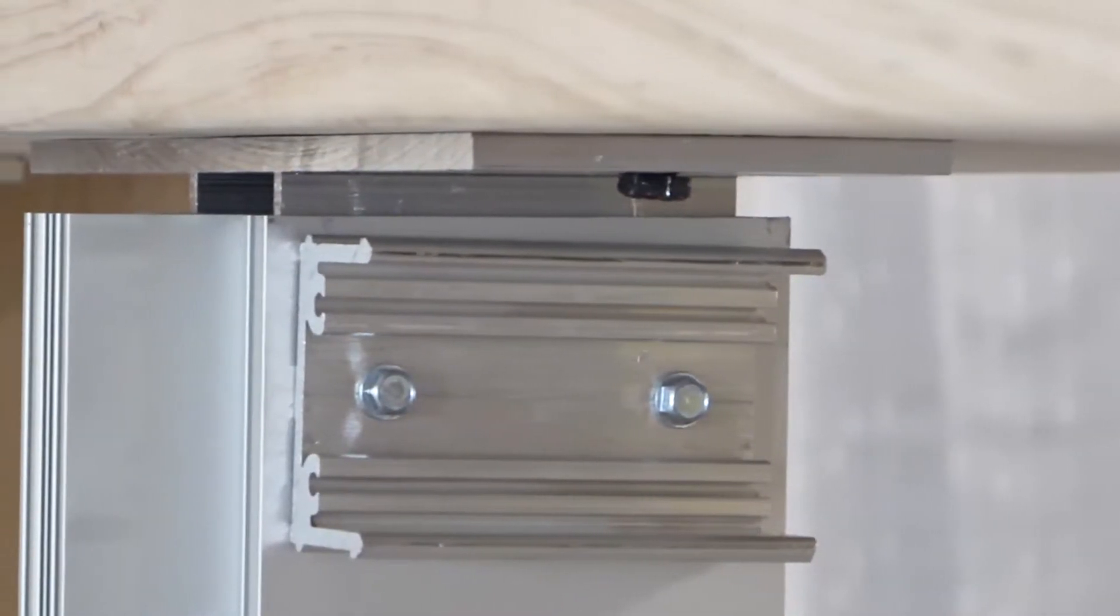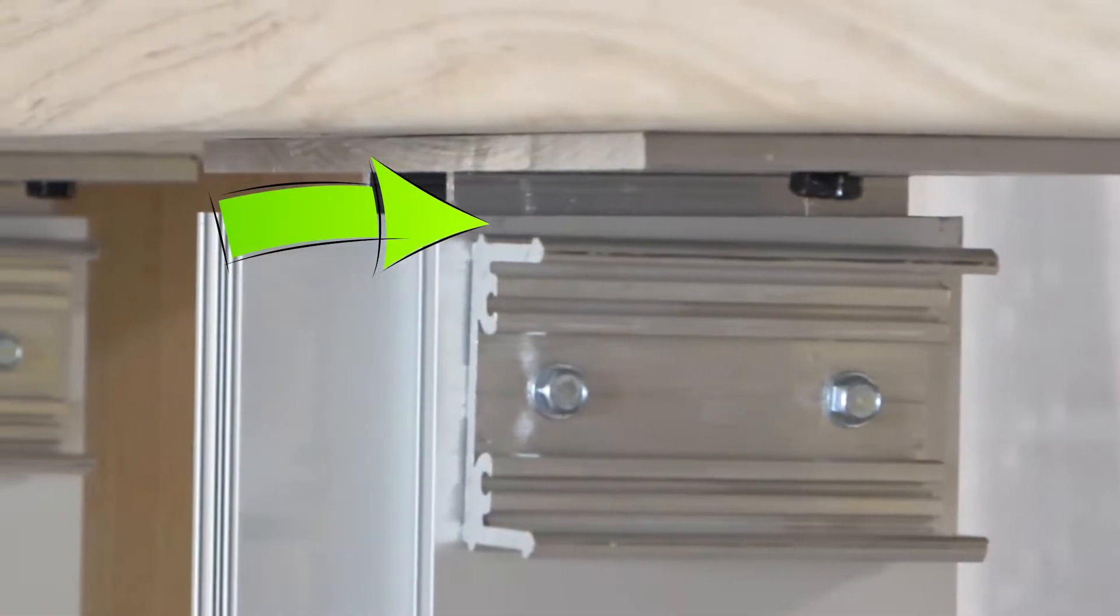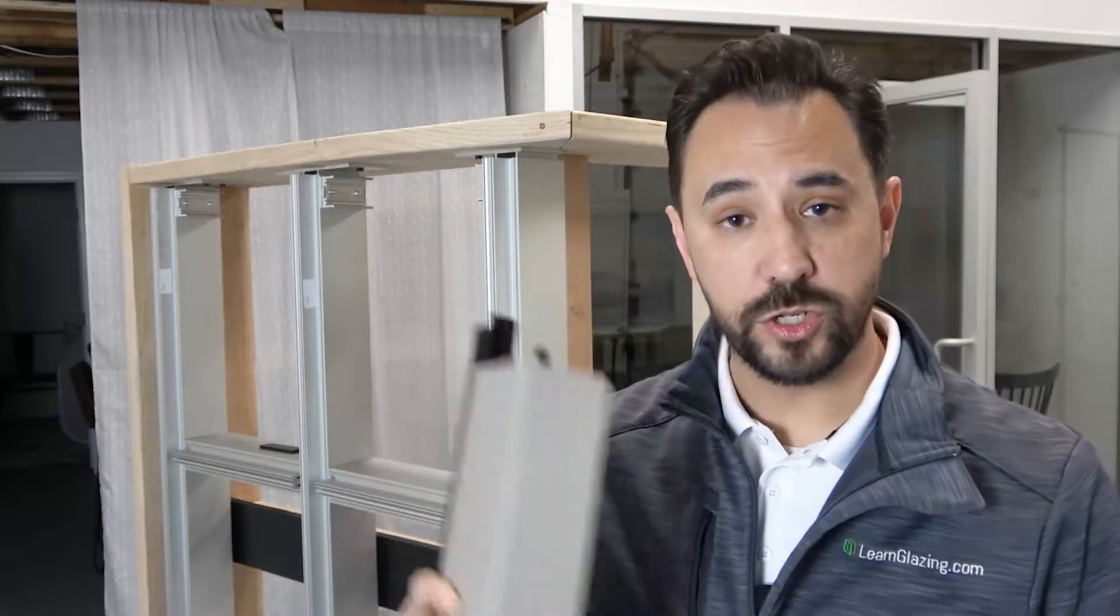Take a look at this shear block. Notice how it's on a slight angle and not quite perpendicular to the frame. As you can imagine, as the head member comes and sits on those shear blocks, it's going to match the angle at which they were installed. But that's not everything.